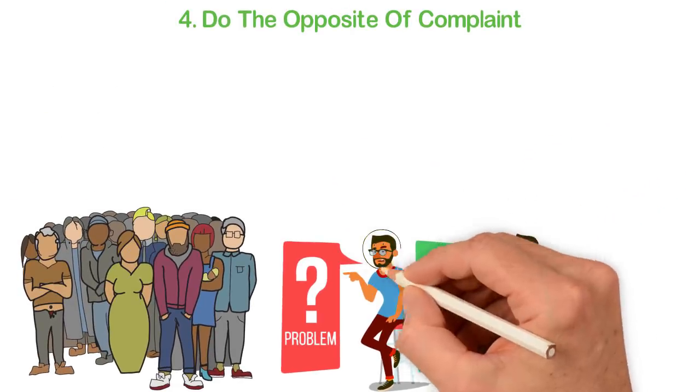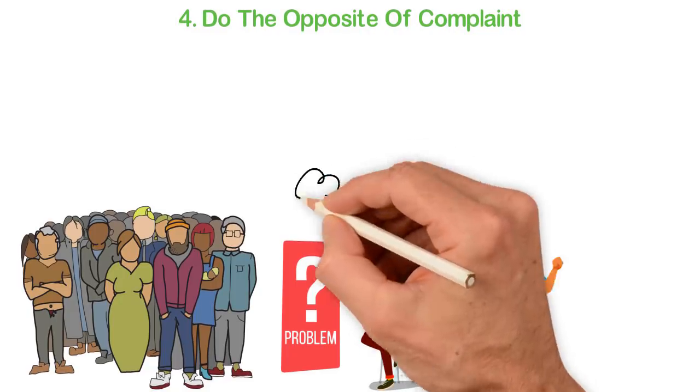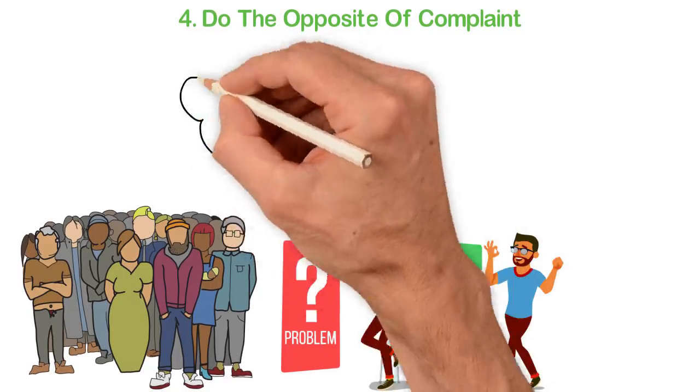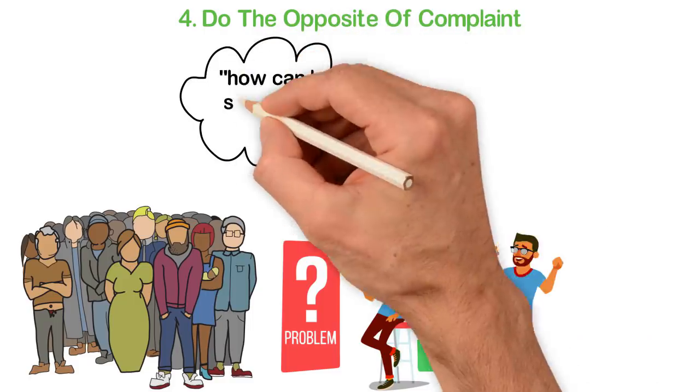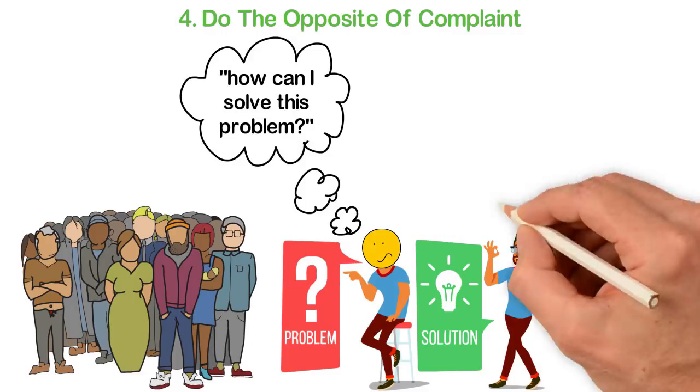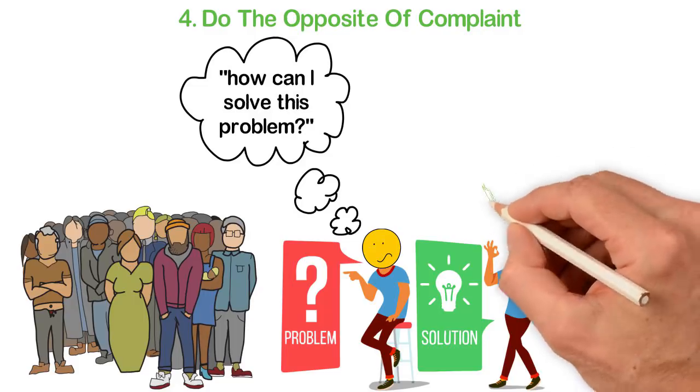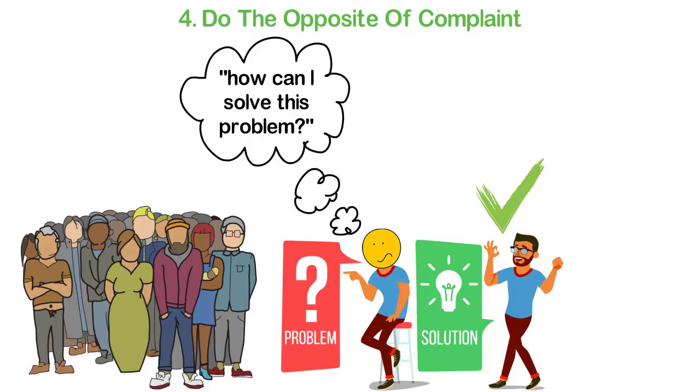If you truly want to build a great business, you have to stop complaining about anything that's wrong. Instead, pay attention to what people complain about and ask yourself, how can we solve this problem? Again, this makes you feel like a messiah and that's fine because until you feel a great responsibility towards the world, until you're angry about something and you're willing to spend your whole life changing it, until you think like a messiah, you can't build a great company.